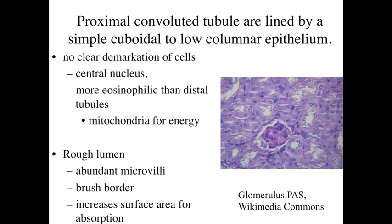The luminal surface of the proximal convoluted tubules has a rough appearance due to abundant microvilli - referred to as a brush border - which increases surface area for absorption. We're pumping ions across this membrane, bringing materials in from the raw filtrate into the cells, essentially reclaiming materials that were squeezed out through the filtration barrier that the body actually wants to maintain and keep.